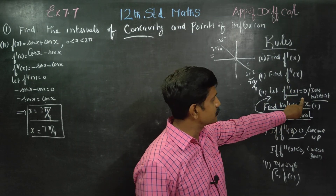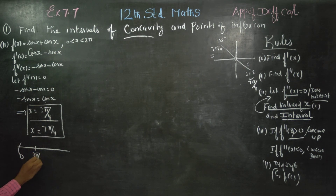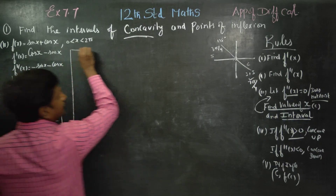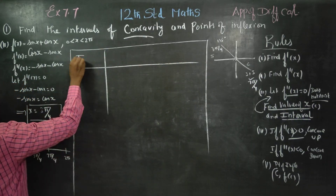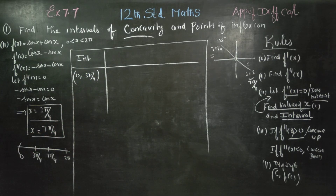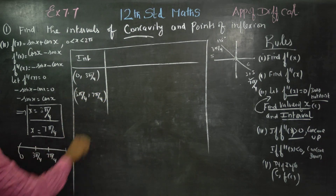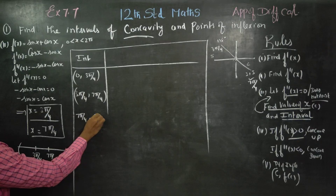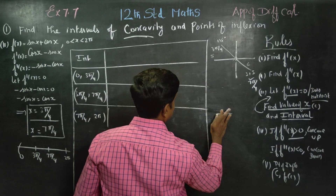f'x is equal to 0. Now you have to draw the intervals. The first interval is 0 to 3 pi by 4, next is 3 pi by 4 to 7 pi by 4, and the last is 7 pi by 4 to 2 pi. We will draw the table.